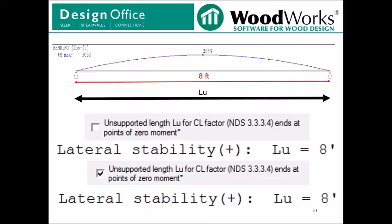Starting with a simply supported beam that is 8 feet long with a uniformly distributed dead and live load. As you can see in the bending moment diagram at the top of the screen, the beam sees positive bending moment only. If you do not have the unsupported length LU feature toggled, LU will be equal to 8 feet, as that is the distance between supports. Although in this situation, since the distance between points of zero moment is also 8 feet due to the loading, toggling the feature unsupported length LU for CL factor ends at points of zero moment will not create any difference in the calculation for LU, and it will also be equal to 8 feet. So in this case, toggling the feature does not have any effect on the overall CL calculations.